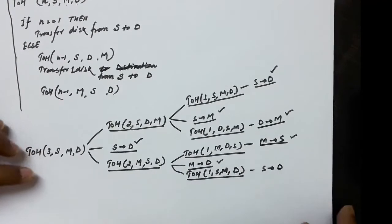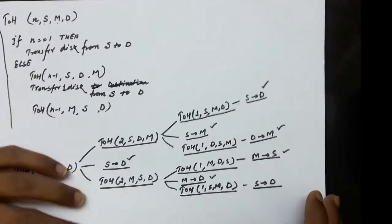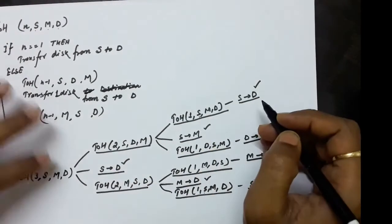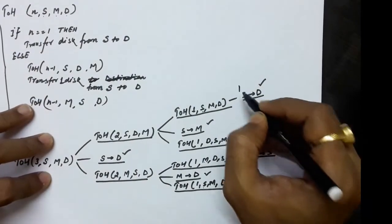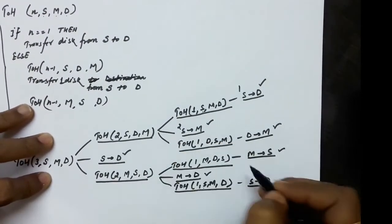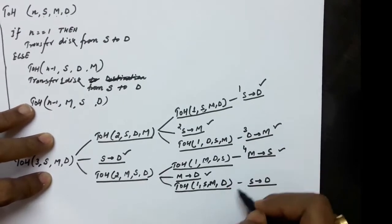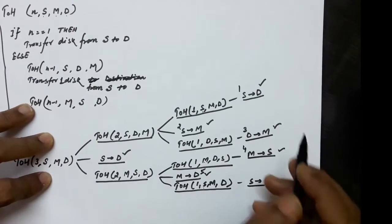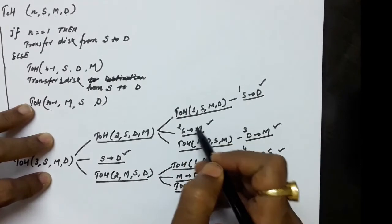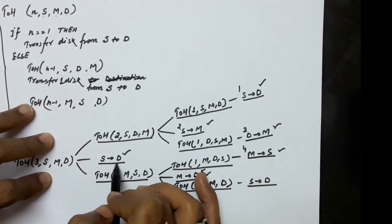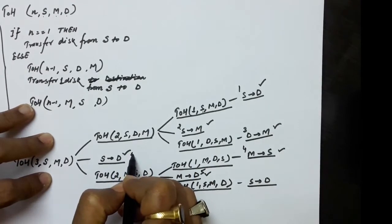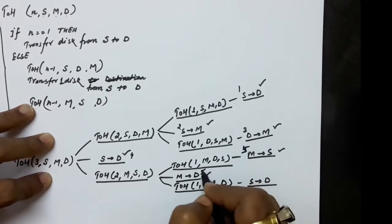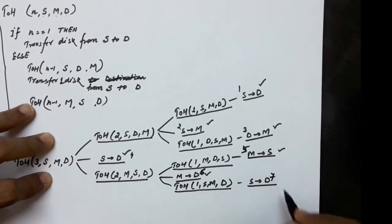Counting the steps: the first step is S to D. The second step is S to M. The third step is D to M. The fourth step is S to D. The fifth step is M to S. The sixth step involves the next transfer. The seventh step is the final one — seven total steps for three disks.